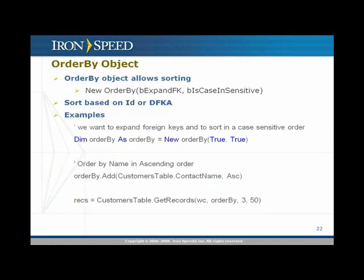The order by clause object takes two arguments when you create an instance: whether to expand the foreign key, and whether the sort is case-insensitive. For example, to expand foreign keys and sort case-sensitively, set both arguments to true, then add sorting criteria — for example, sort by ContactName first, then by Country ascending using orderby.Add(CustomersTable.Country, ascending), then call GetRecords.